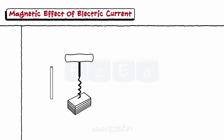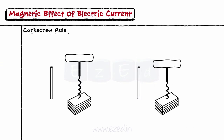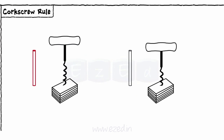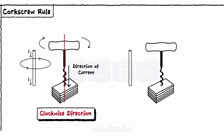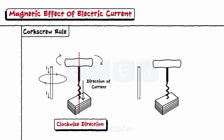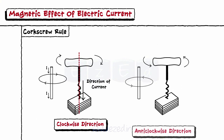The direction of the rotation of the flux is also determined by the corkscrew rule. Consider a current carrying conductor and a screw. Assume the axis of the screw is parallel to the conductor and the tip of the screw is pointing in the direction of the current. Then, the direction of the magnetic field is determined by the direction in which the screw must be turned so as to advance in the direction of the current. If the screw rotates in the clockwise direction, the direction of the current through a conductor will be from top to bottom. And if the screw rotates in the anti-clockwise direction, the current flows from bottom to top.